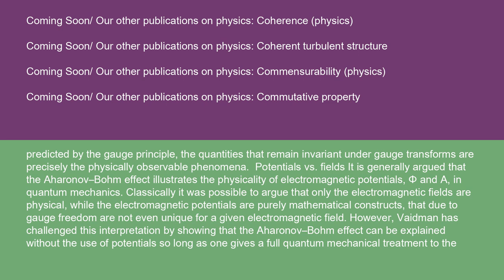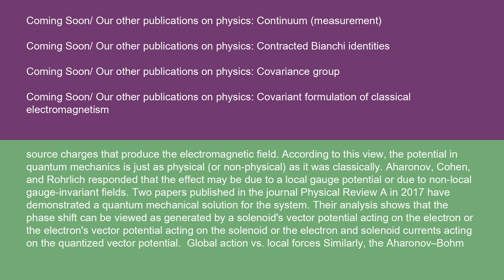Potentials versus fields: It is generally argued that the Aharonov-Bohm effect illustrates the physicality of electromagnetic potentials φ and A in quantum mechanics. Classically, it was possible to argue that only the electromagnetic fields are physical, while the electromagnetic potentials are purely mathematical constructs that, due to gauge freedom, are not even unique for a given electromagnetic field. However, Vaidman has challenged this interpretation by showing that the Aharonov-Bohm effect can be explained without the use of potentials, so long as one gives a full quantum mechanical treatment to the source charges that produce the electromagnetic field. According to this view, the potential in quantum mechanics is just as physical or non-physical as it was classically.